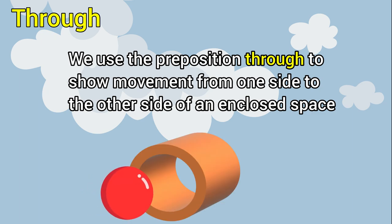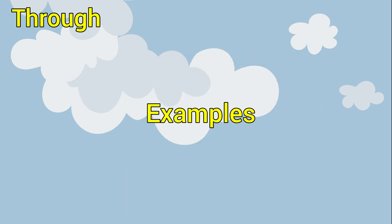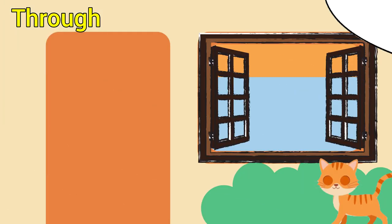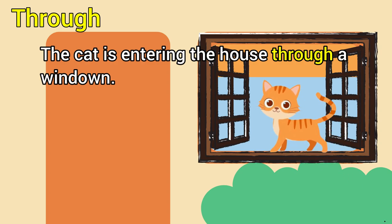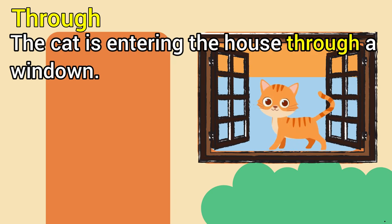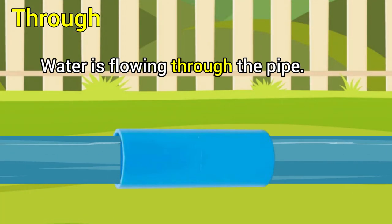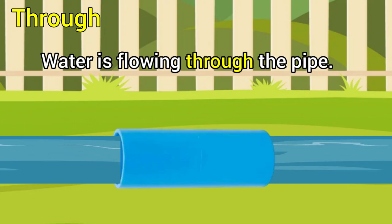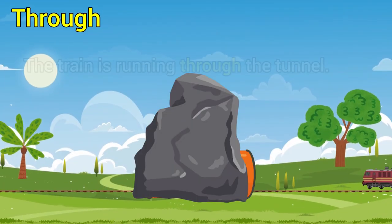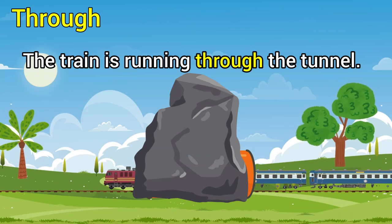Next, 'through.' We use the preposition 'through' to show movement from one side to the other side of an enclosed space. Examples: the cat is entering the house through a window. Water is flowing through the pipe. The train is running through the tunnel.